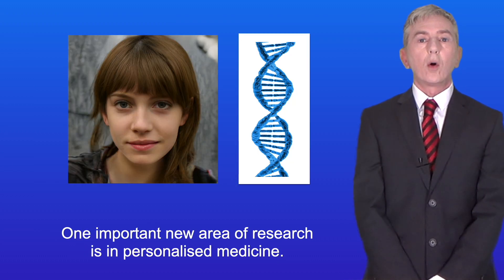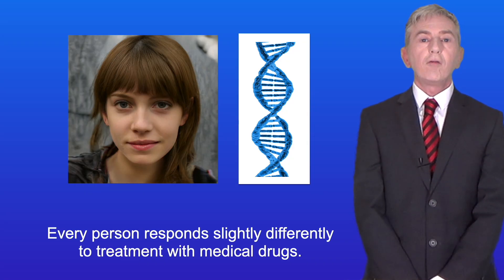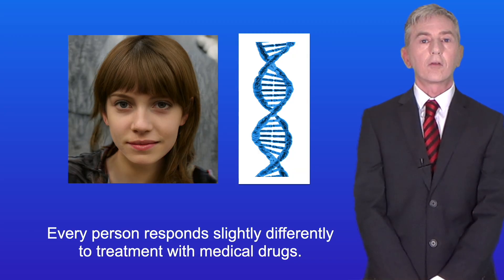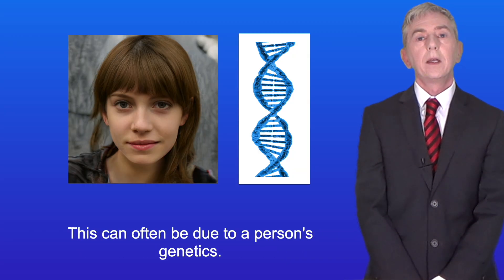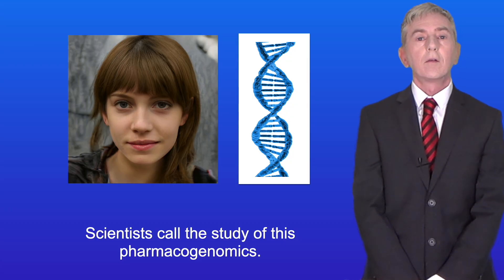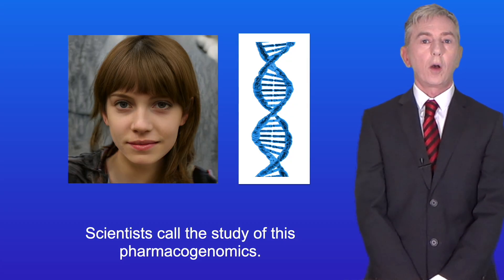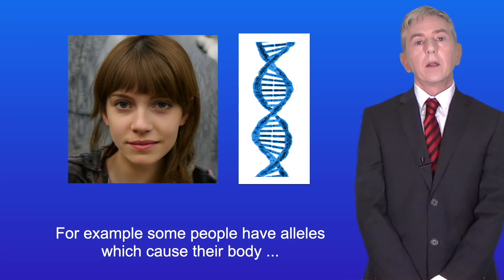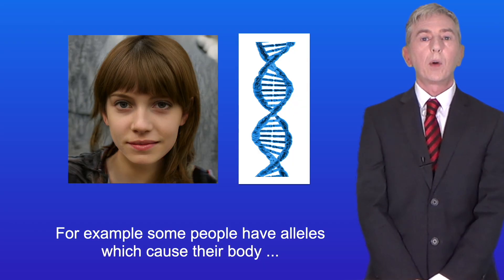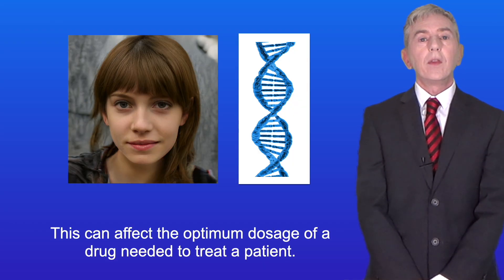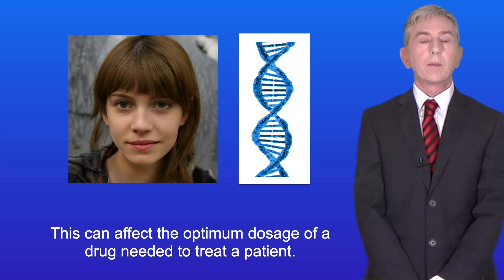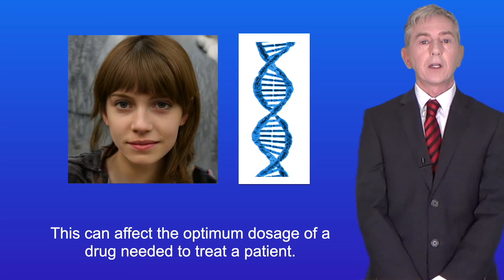Now one important new area of research is in personalized medicine. Every person responds slightly differently to treatment with medical drugs, and this can often be due to a person's genetics. Scientists call the study of this pharmacogenomics. For example, some people have alleles which cause their body to break down drugs more rapidly than other people, and this can affect the optimum dosage of a drug needed to treat a patient.